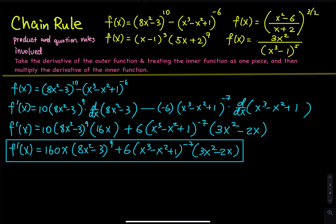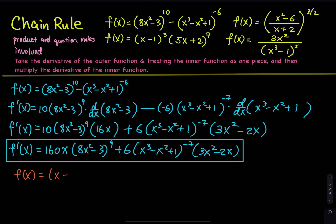So that's the first function. The next function — let's take care of the one with x minus 1 raised to the third power. The next function is f of x equals x minus 1 to the third power, multiplied by 5x plus 2 to the seventh power. So this is a product of two factors.